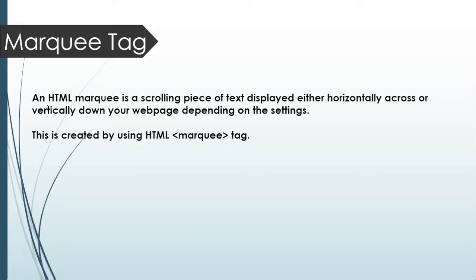The HTML marquee tag is used to scroll a piece of text displayed either horizontally across or vertically down on your web page, depending on the settings. That means it depends on your requirement — whether you want to scroll text, image, or anything else in a web page.